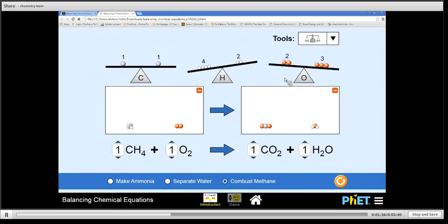So let's start off with hydrogen. The only way I can add more hydrogens to the products is by adding more water. So I can change it to a two. And now I have got four hydrogen atoms and I have four hydrogen atoms over there.